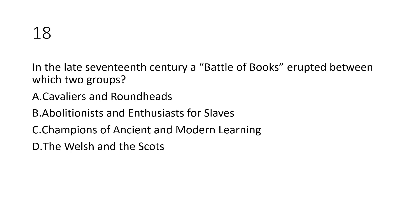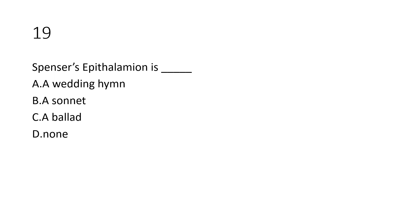Question number eighteen: In the late 17th century, a battle of books erupted between which two groups? Option A: Cavaliers and Roundheads; option B: Abolitionists and enthusiasts for slavery; option C: champions of Ancients and Modern learning; option D: Welsh and the Scots. Question number nineteen: Spenser's Epithalamion is: option A, a wedding hymn; option B, a sonnet; option C, a ballad; option D, a nun.